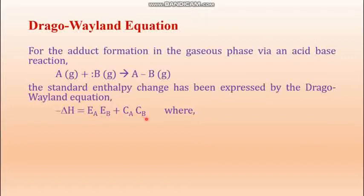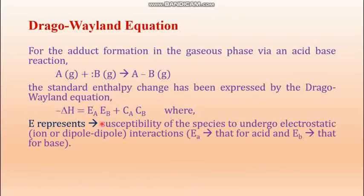Now what are E_A, E_B and C_A, C_B? The E parameters are the tendency or susceptibility to form electrostatic bonds — that means electrostatic interactions such as ion-dipole interaction or dipole-dipole interaction.